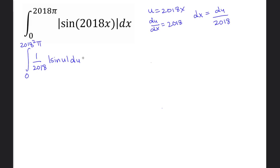We can rewrite this as (1/2018) times the integral from 0 to 2018²π of |sin u| du.